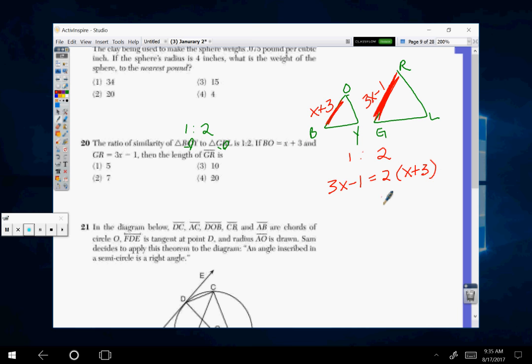And then you just solve for X. So 3X minus 1 equals 2X plus 6. Subtract the 2X from 3X, get X, add the 1 over, you get X is 7. But it wants the length of G-R, so we have to do 3 times 7 which is 21. 21 minus 1 is 20.